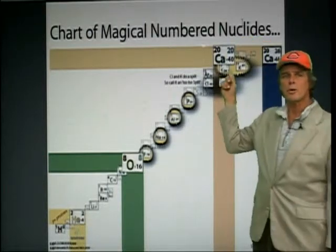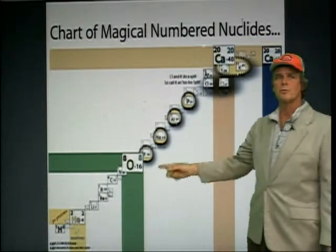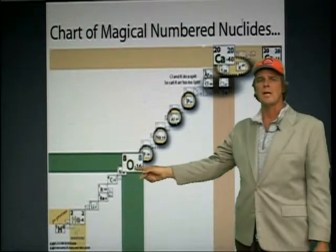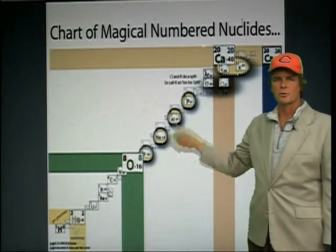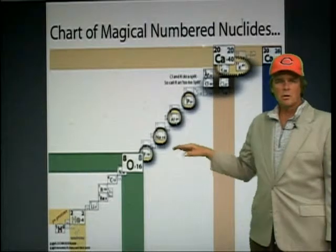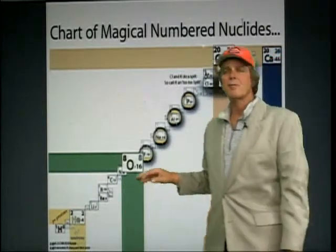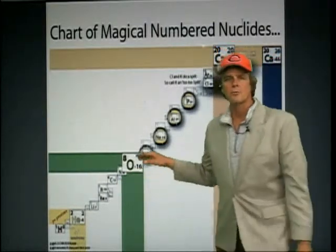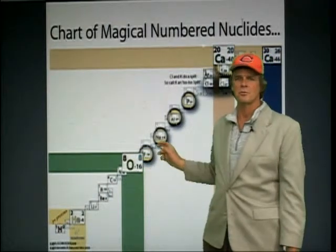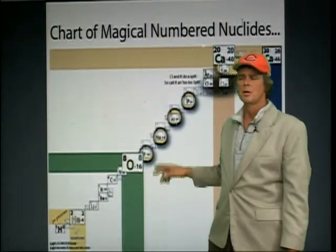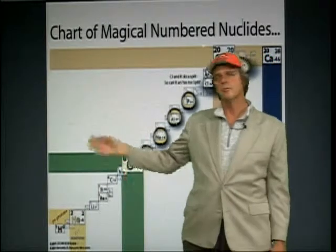But look in between. From calcium with 20 protons to oxygen with eight, we have 12 proton differences in here. Now, if you looked at the real chart of the nuclides that had everything in it, you would see other isotopes.